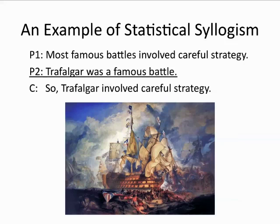Here's another example taken from naval history. Premise one: most famous battles involved careful strategy. Premise two: Trafalgar was a famous battle. Conclusion: so Trafalgar involved careful strategy. This is a syllogism — an argument with three lines, two premises together with a conclusion. It uses a non-universal generalization in the first premise, a specific statement as the second premise, and ascribes a certain feature — namely careful strategy — on the basis of Trafalgar's classification as a famous battle.